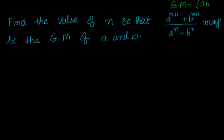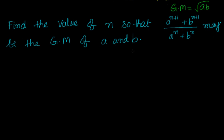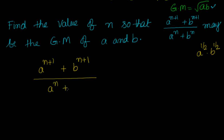Now, if a and b are two numbers, the geometric mean is given by the square root of ab, which can be written as a to the power of half into b to the power of half. That means a to the power of n plus 1 plus b to the power of n plus 1, divided by a to the power of n plus b to the power of n, should equal a to the power of half into b to the power of half. We have to find the value of n.